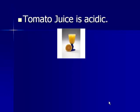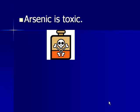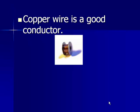Tomato juice is acidic. Actually, that looks like a picture of orange juice there instead of tomato juice. But acidic is a chemical property. Arsenic is toxic — that is a chemical property. Copper wire is a good conductor, and that is a physical property.